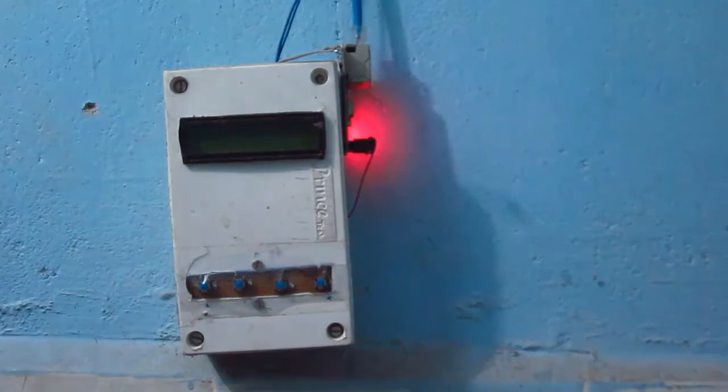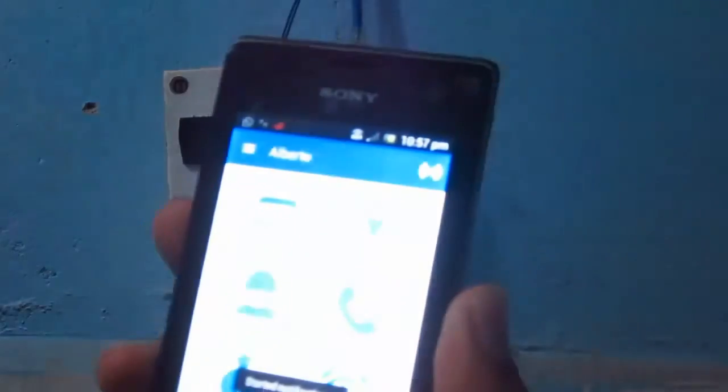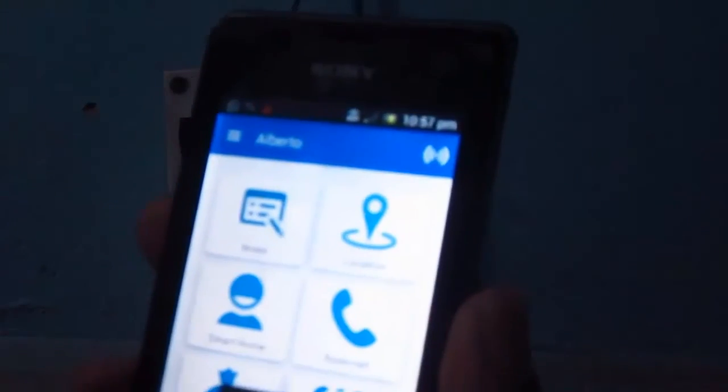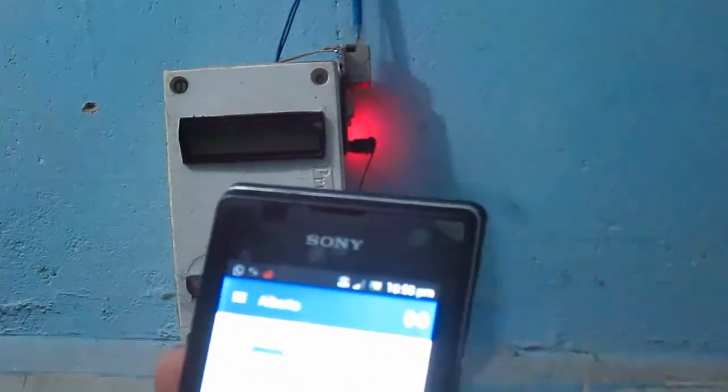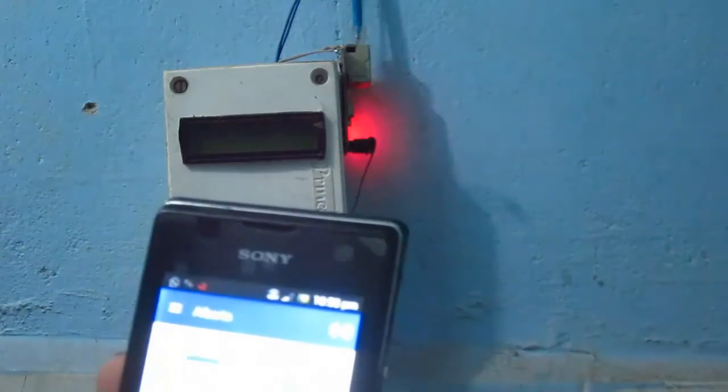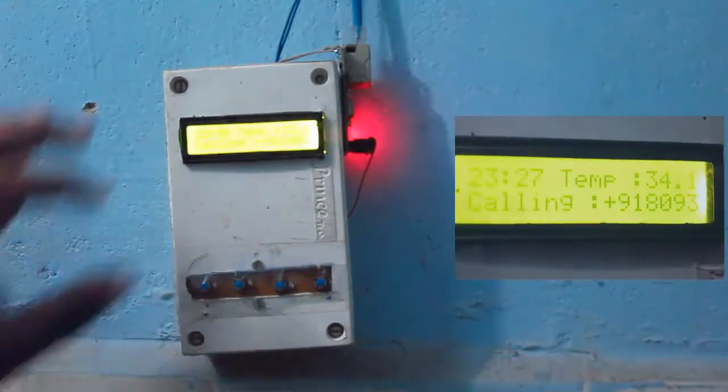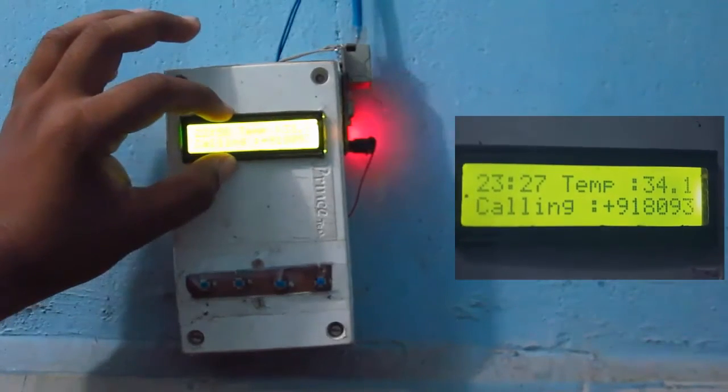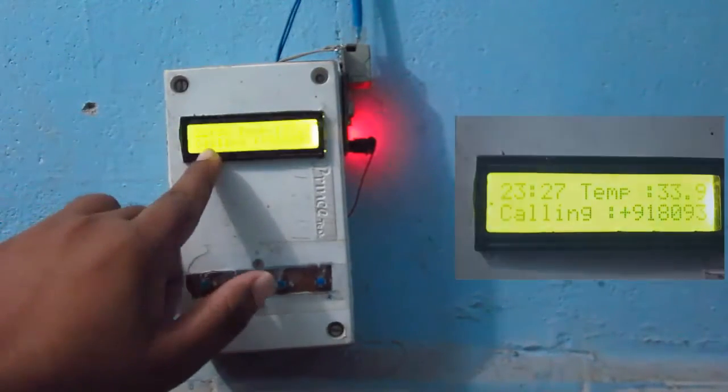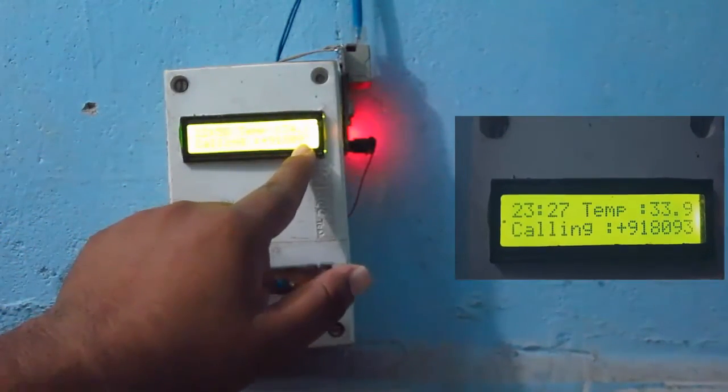The important feature of this module is it notifies me whenever I get a call on this mobile. You can see now I am calling this phone from my other number. When I am getting a call, the background LED of the LCD is flashing and it's showing calling with the number from which I am getting the call.